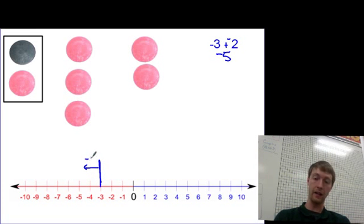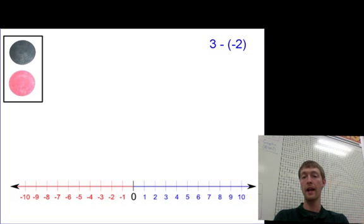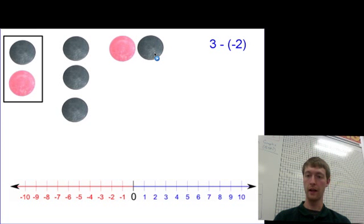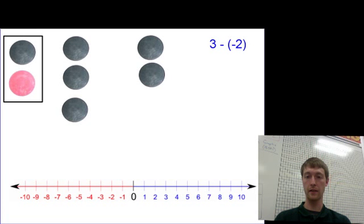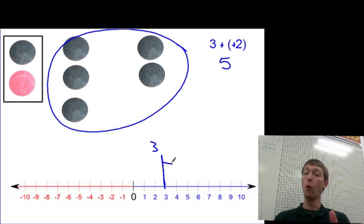Taking away a positive is adding a negative, just like three minus two is the same thing as three plus negative two — we're getting more negative. Now let's look at what it would look like to subtract a negative. I have three positives, and to subtract a negative I need a negative on the board to take it away. So I put a red with a black — they're opposites, so it's like adding nothing. Those cancel out, and now I have two reds I can take away. We are starting at three and getting less negative, which means getting more positive. So subtracting a negative is the same thing as adding a positive — we get more positive by two.